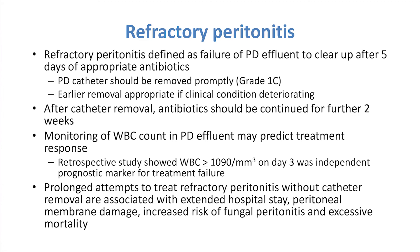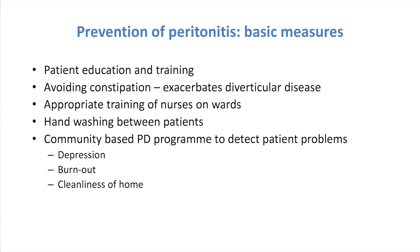Refractory peritonitis we've really covered, and I want to move on to thinking about prevention. In terms of prevention of peritonitis, the basic measures of patient education and training — I can't emphasize that enough. The ISPD has a guideline on how to train the patients, but obviously you are going to need to train your nurses first. Avoid constipation — it's a big problem in PD, not just in terms of catheter function, but particularly with older patients. If they get constipated, they increase the risk of activating their diverticular disease, which can predispose to gram-negative infections.